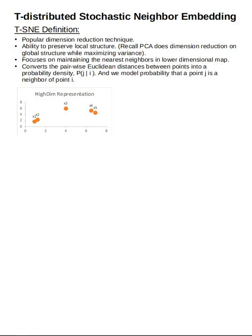As part of its modeling, T-SNE converts these pairwise distances — X1 to X2, X1 to X3, X1 to X4, X1 to X5 — and converts them into a probability density function. That probability density function lets us ask: what is the probability that point X2 is a neighbor of X1, or that point X4 is a neighbor of X1? That's the key difference in how it models compared to other dimensionality reduction techniques.